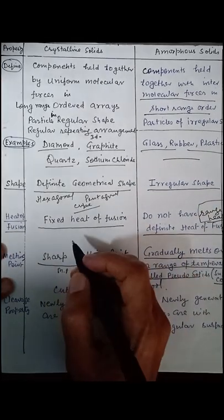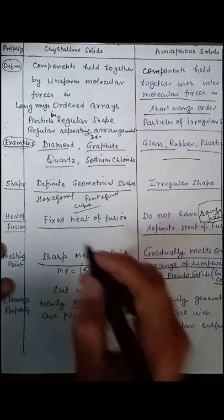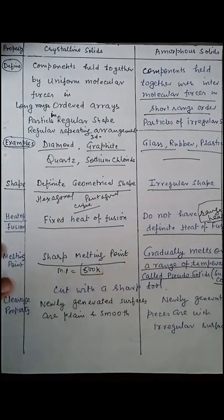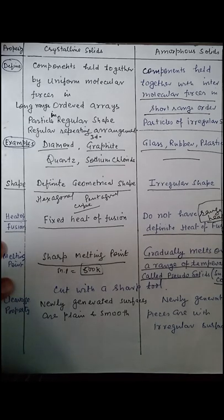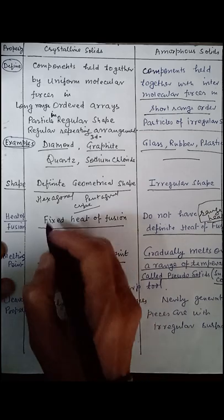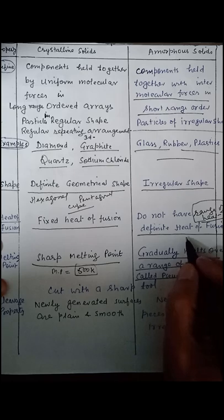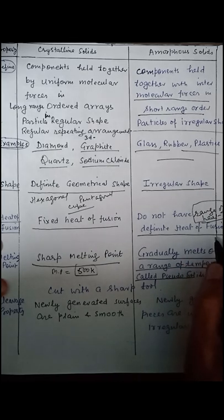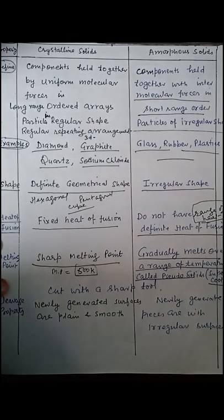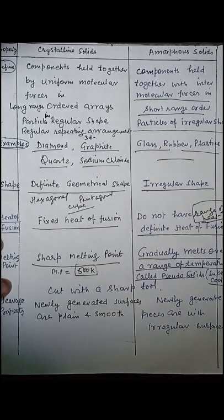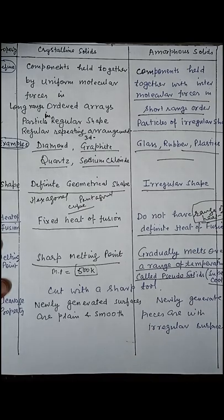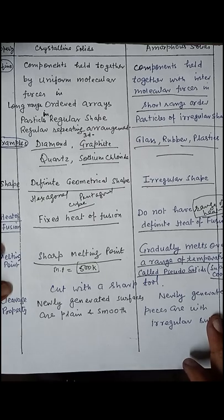Another point of difference is heat of fusion. Heat of fusion is the heat required to convert the solid state into liquid state. In crystalline solids, the heat required is fixed. But in amorphous solids, they do not have a definite heat of fusion — they have a range of heat at which the solid is fused.